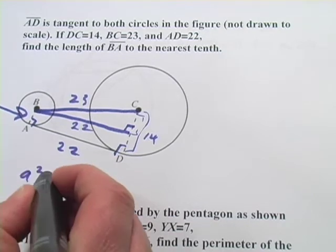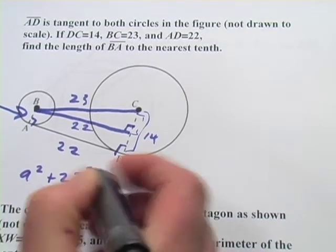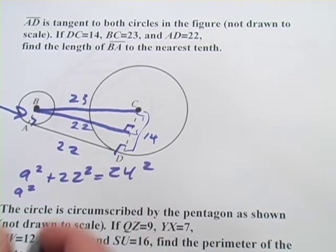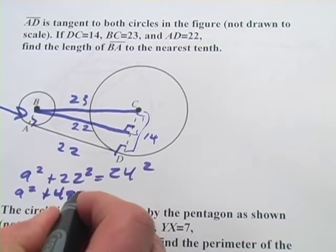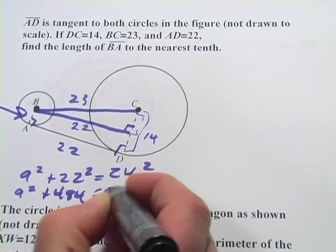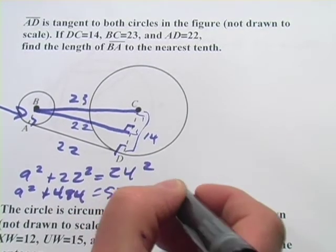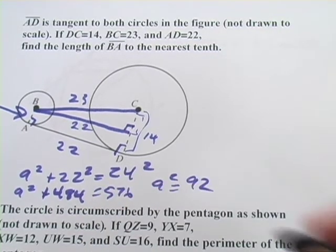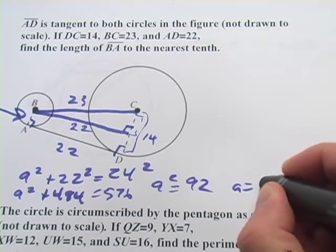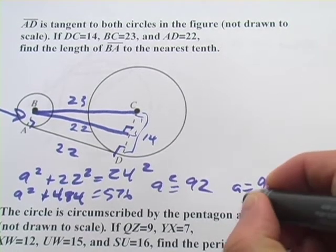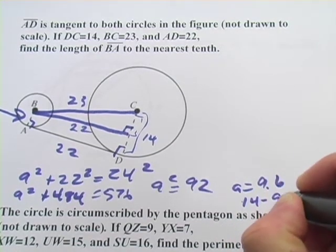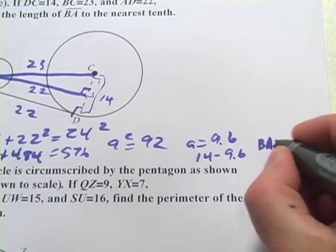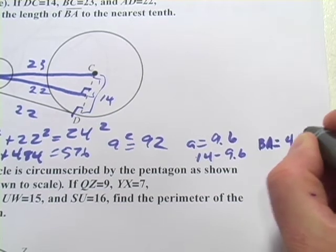So let's try that. So we'd have a squared plus 22 squared equals 23 squared. So a squared plus 484 equals 529. So a squared equals 92 and square root of that we're going to have a equals 9.6. We subtract that from 14 and we get BA is 4.4 units.